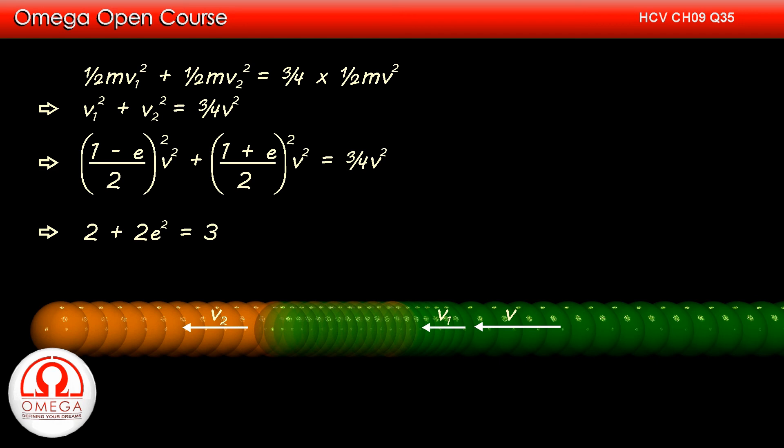Simplifying, we get 2 plus 2E square is equal to 3 or E square is equal to 1 by 2. This implies E is equal to root under 1 by 2. This is our answer.